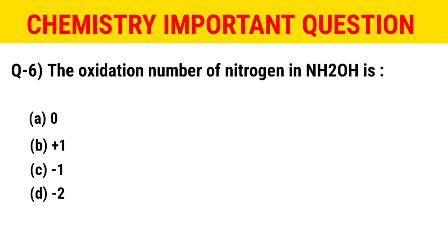The next question: what is the oxidation number of nitrogen in NH₂OH? The options include −1 and −2 among others. The correct option is C — that is −1.